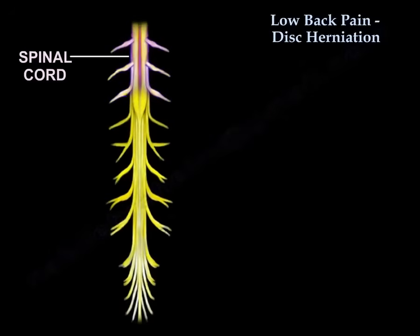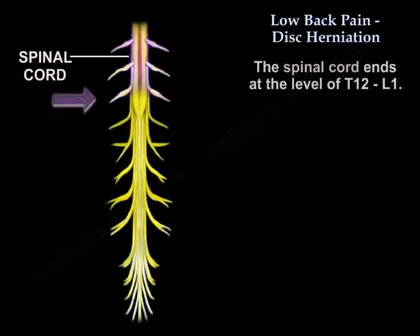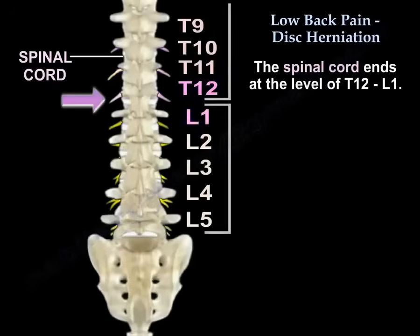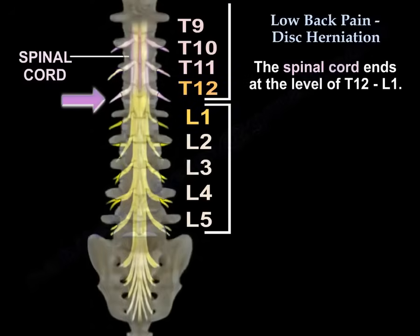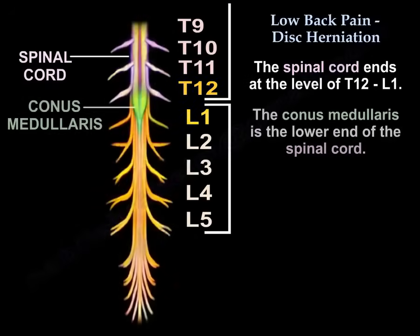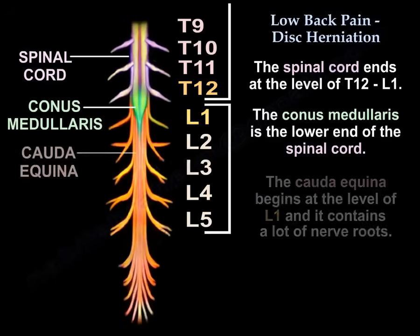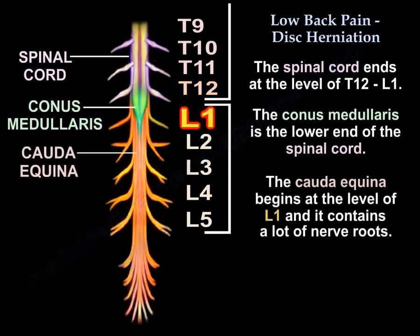You find the spinal cord which ends at the level of T12-L1. The conus medullaris is the lower end of the spinal cord. And the cauda equina, which begins at the level of L1, contains a lot of nerve roots.